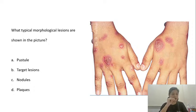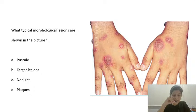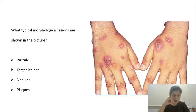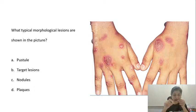This is our question for today. What typical morphological lesions are shown in the picture? Is it a pustule, is it a target lesion, is it a nodule or a plaque? Parag says it is B — target lesions. GDPC says target lesion, Fatima says B, Sindhu says B. We go with the majority — yes, you are right. The answer is a target lesion.